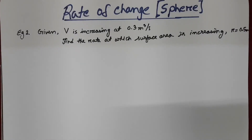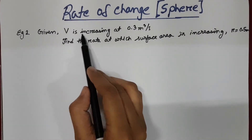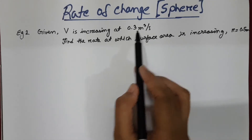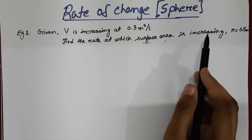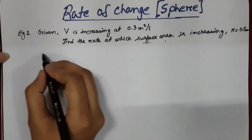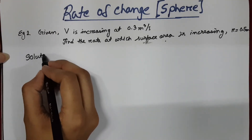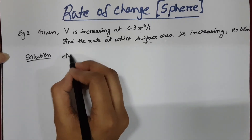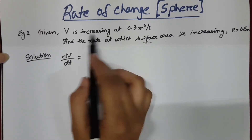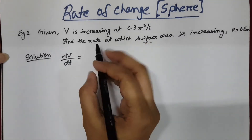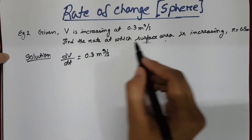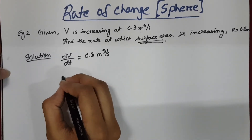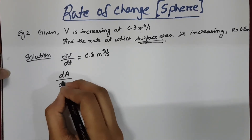Here is a second example, in which we know the rate at which the volume of the sphere is increasing, which is 0.3. And we need to find the rate at which the surface area is increasing. So we know dV/dt = 0.3, and we need to find dA/dt.